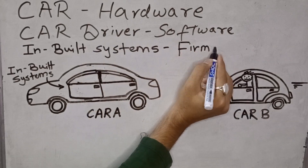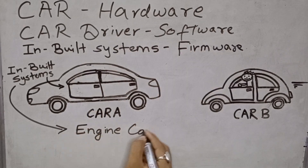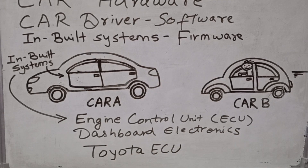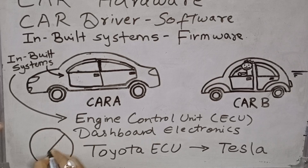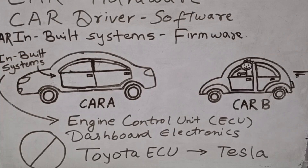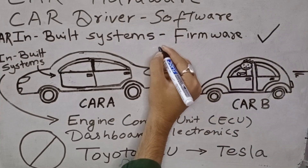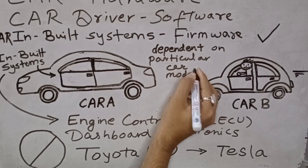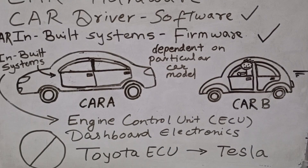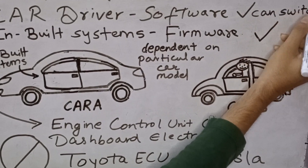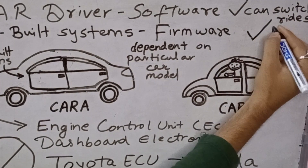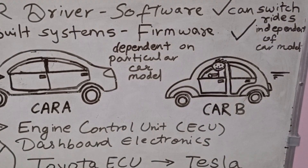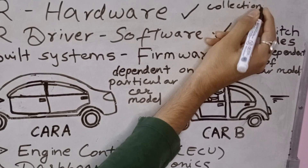Firmware, on the other hand, is like the car's built-in systems, like the engine control unit and dashboard electronics. You can't just take the ECU from a Toyota and put it into a Tesla — it will never work. So, while software is flexible and can switch between different hardware, like a driver changing cars, firmware is tightly bound to its specific hardware, like a car's internal systems.